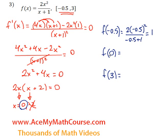What about f of 0? We can plug in 0 for x. 2 times 0 squared is just 0. Divided by 1, 0.